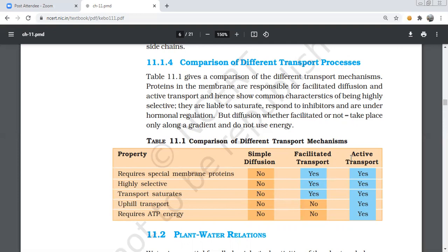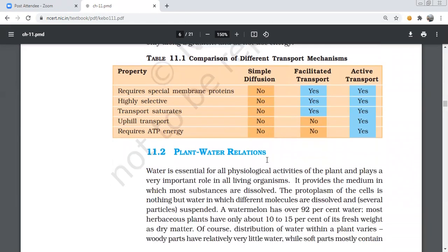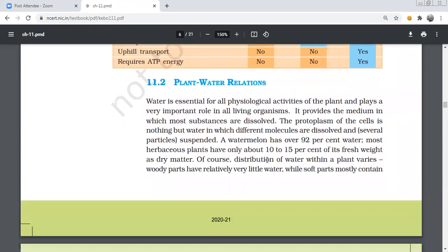Okay, so do you understand what active transport is and what passive transport is? Do you have the idea? Okay, good. Now we'll move on to the next topic: plant and water relationships, including water potential, solute potential, and pressure potential.